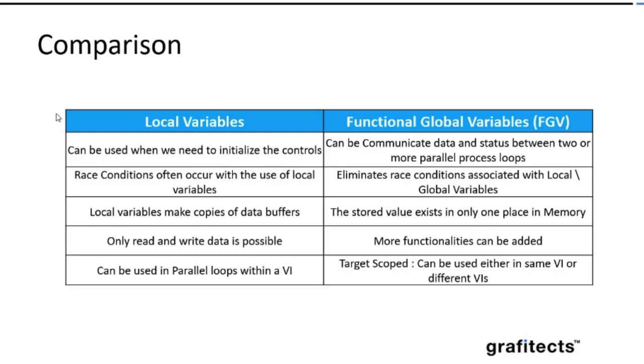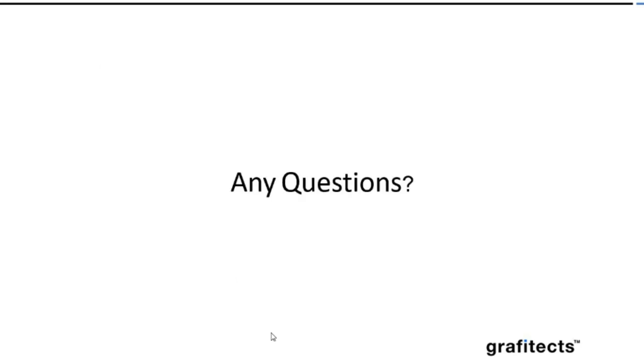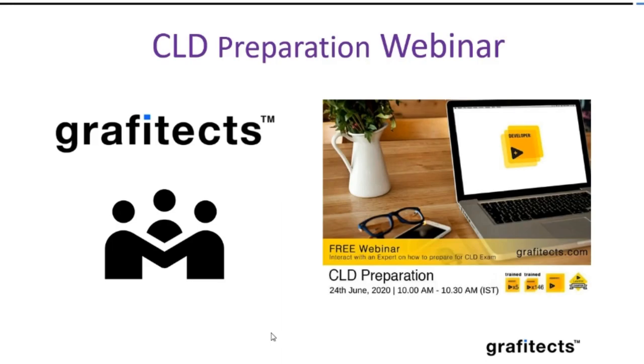This comparison that I have put together is based on the last five slides that we have discussed. When the best choice to use the local variables is to initialize the controls, that is when we are trying to write data to the controls. This is the best choice when we can use it. You can use FGV in parallel loops within a VI, and this is going to be a target scope. Can we use within the same VI or in a different VI? Yeah, so questions offline, please. Yeah, thank you.